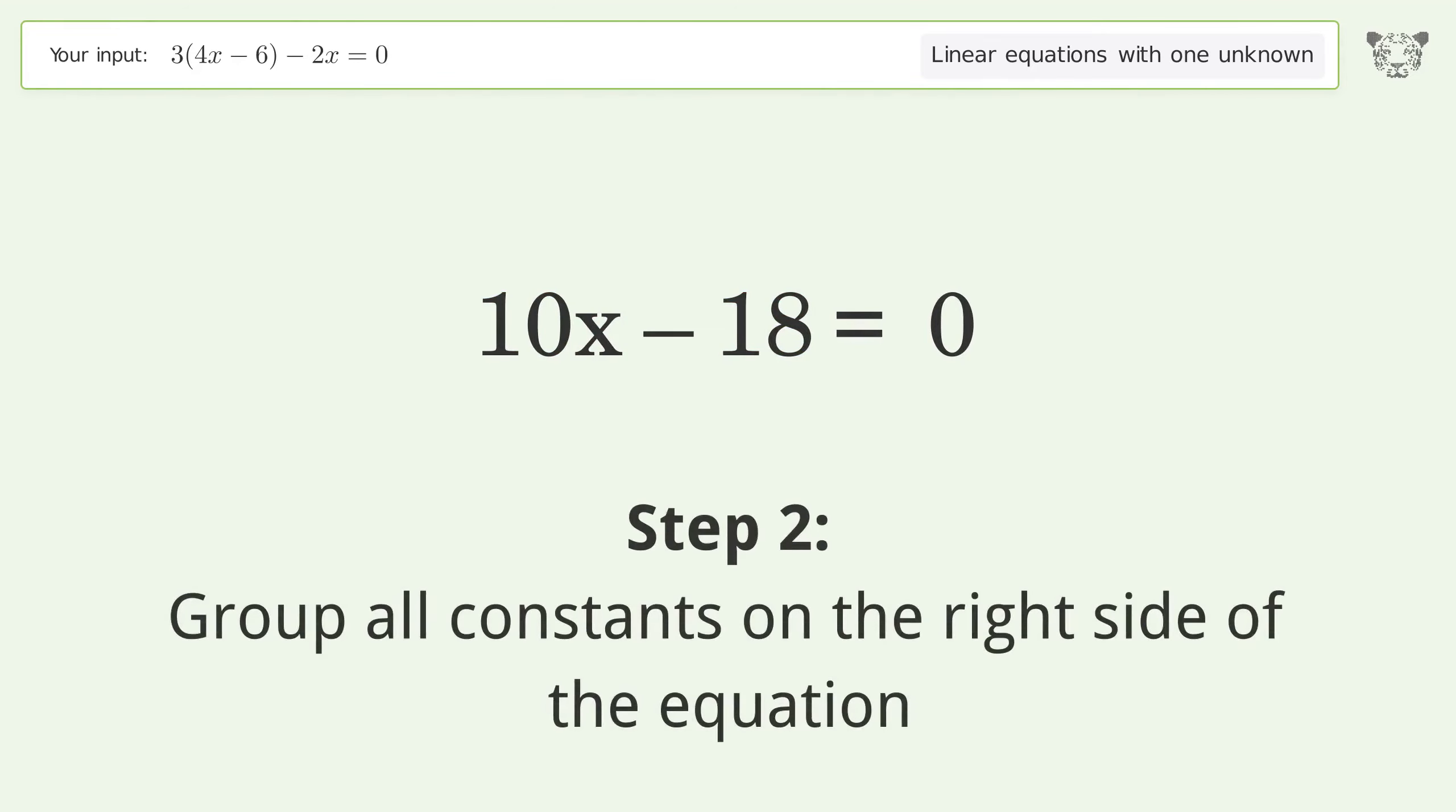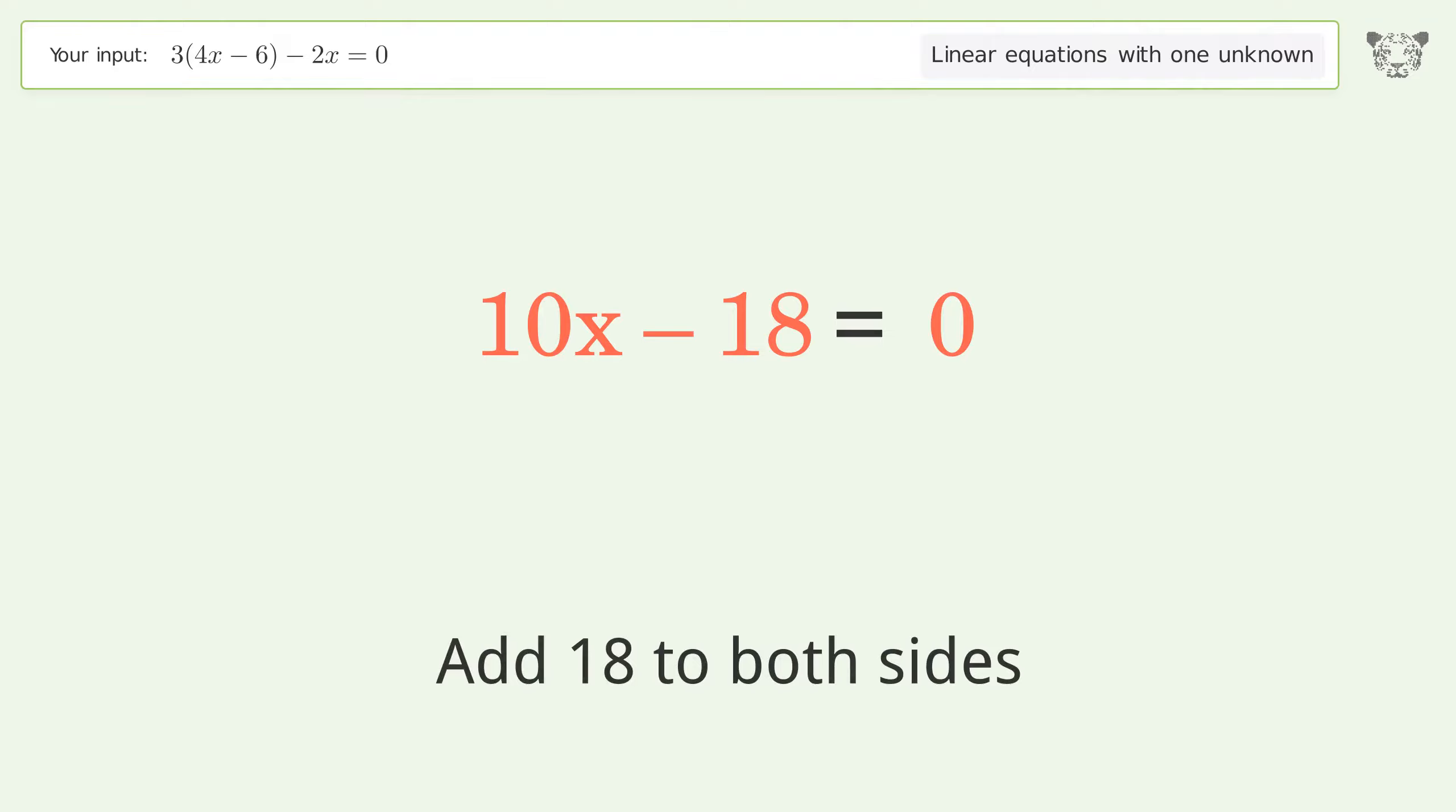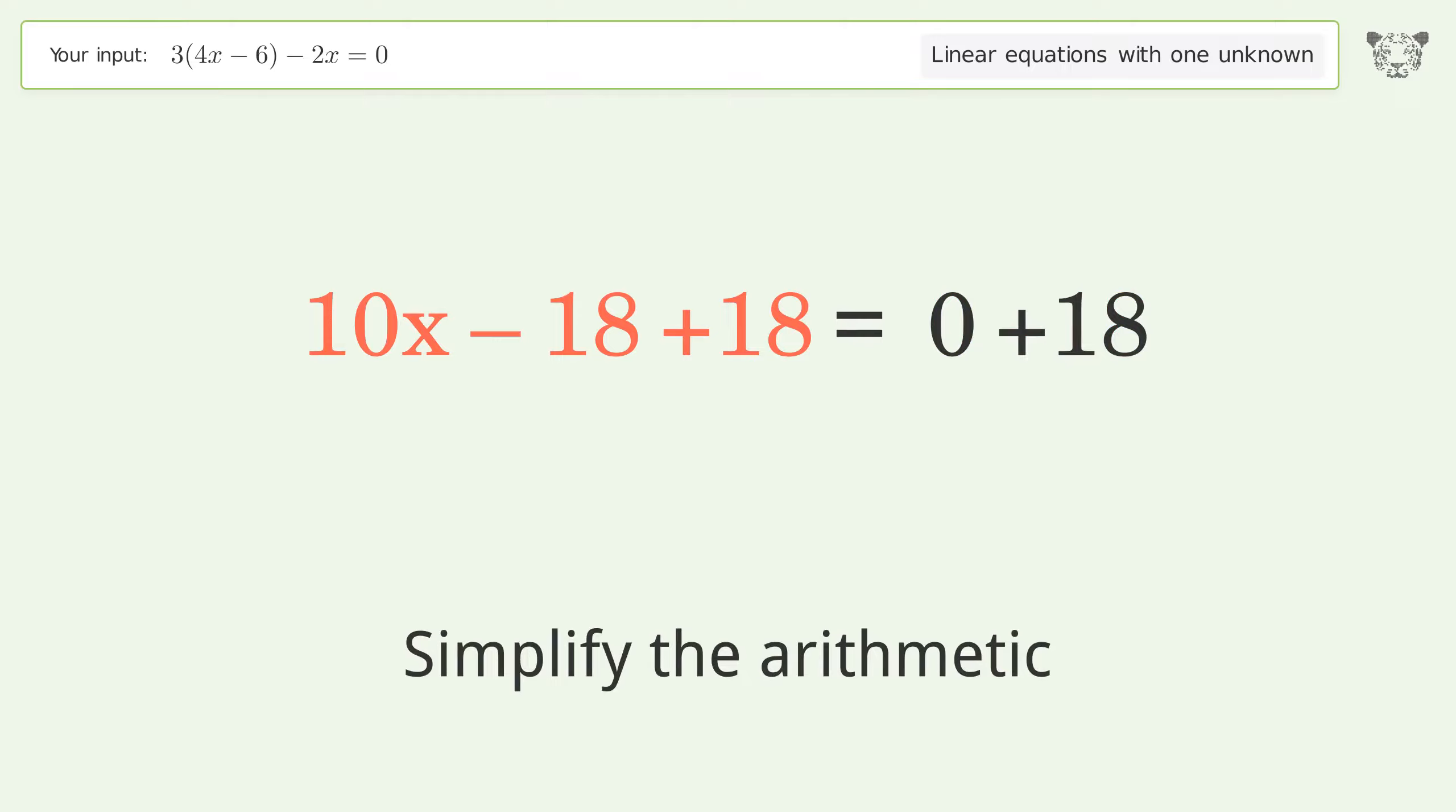Group all constants on the right side of the equation. Add 18 to both sides. Simplify the arithmetic.